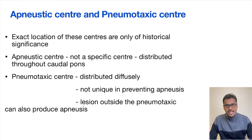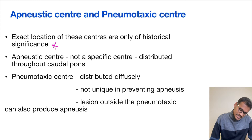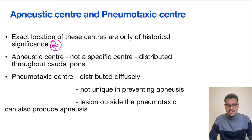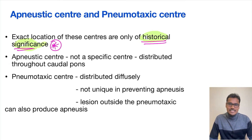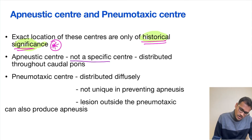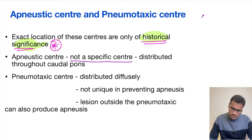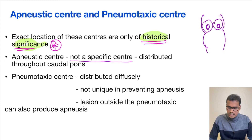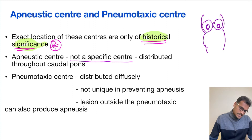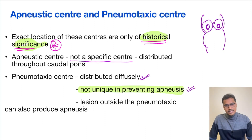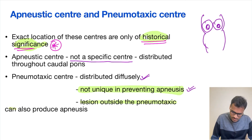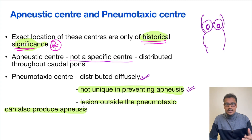Now let's understand the change in the apneustic and pneumotaxic centers. Present studies say the exact location of both the apneustic and pneumotaxic centers is only of historical significance. Their functions are still asked by examiners, but the exact locations are controversial in current studies. The apneustic center is not a specific center — it is distributed throughout the caudal pons, with many small neurons contributing to apneusis. Similarly, the pneumotaxic center is distributed diffusely, and lesions outside it can also cause apneusis, making the concept of these distinct centers no longer valid.